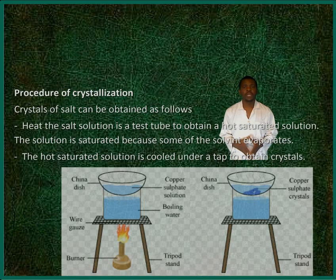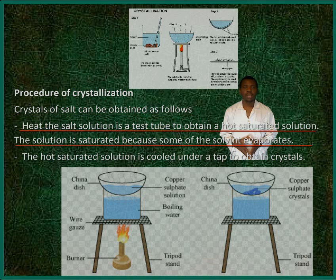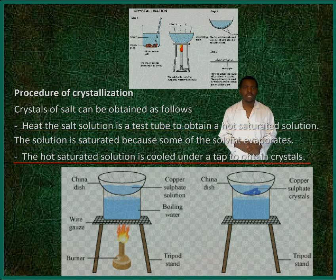Procedure of crystallization. Crystallization of salt can be obtained as follows. Heat the salt solution in a test tube to obtain a hot saturated solution. The solution is saturated because some of the solvent evaporates. The hot saturated solution is cooled under a tap to obtain crystals.